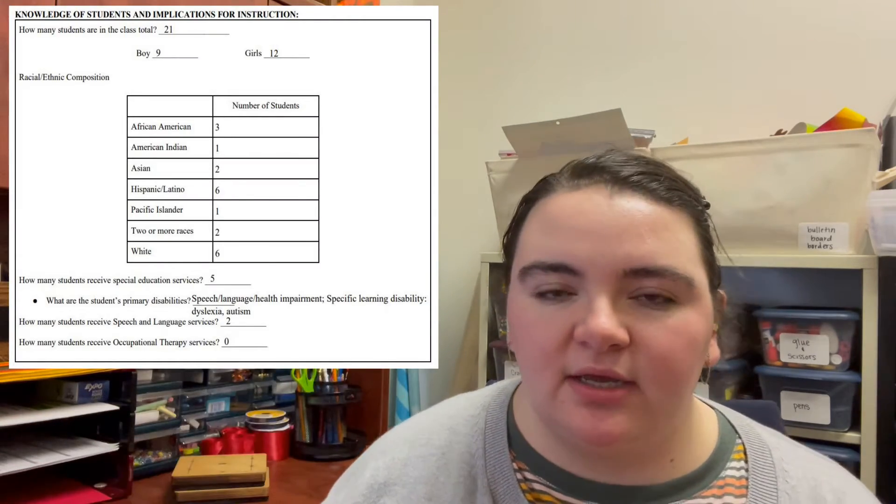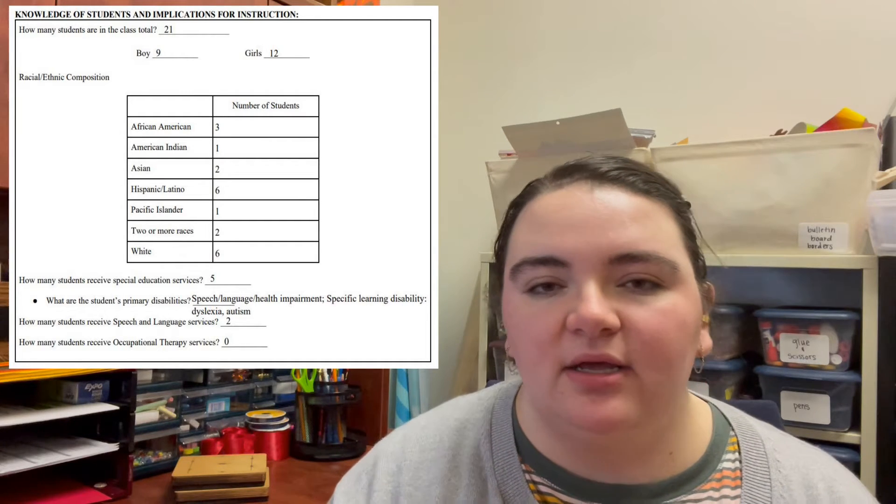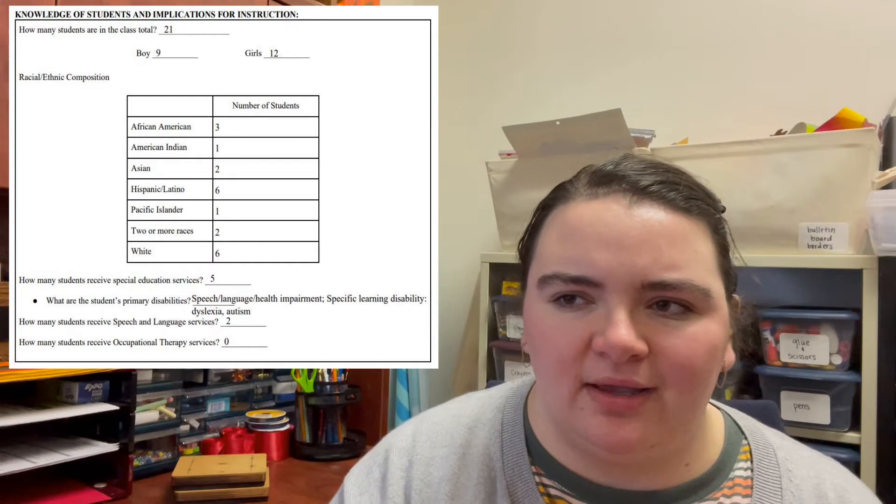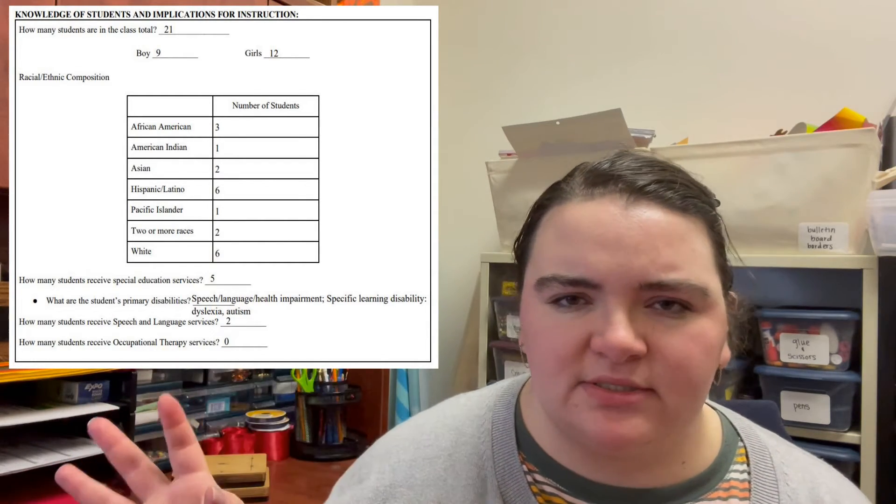My mentor teacher gave me this huge binder which basically explained the backgrounds of each of the students — if they had IEPs, 504s, behavior plans, that whole binder would explain that. I would also suggest generally writing the demographics of your classroom: gender, race, any behavioral modifications that need to be made. It basically provides context. I might be able to find a sample lesson plan I had to write — there is a section called 'knowledge of students' that asks for race, gender breakdown, and if any students are receiving services.